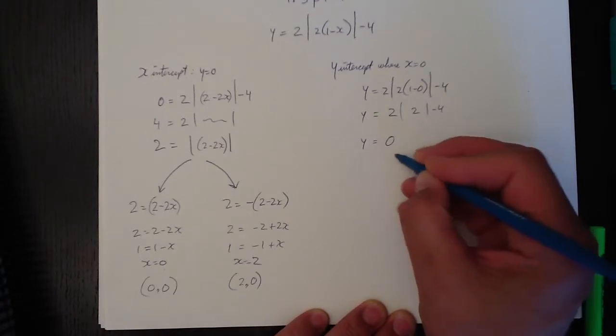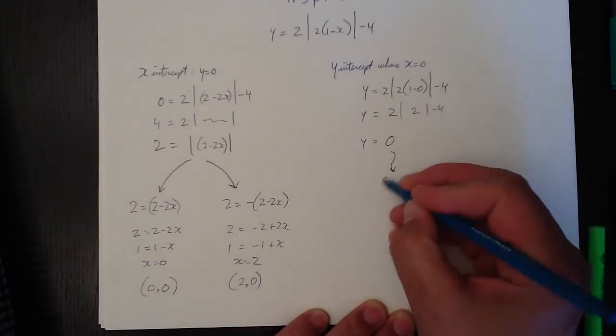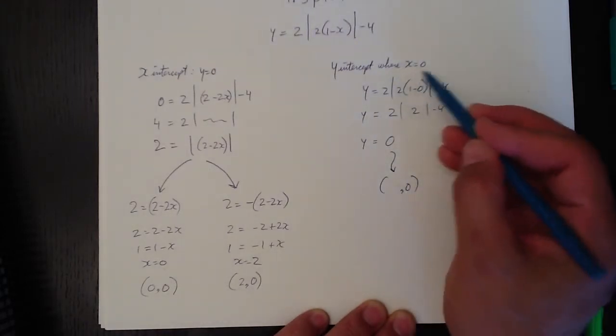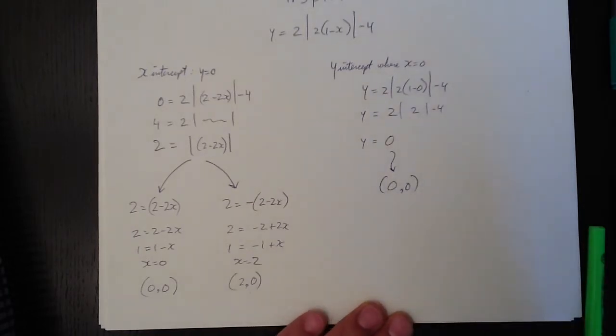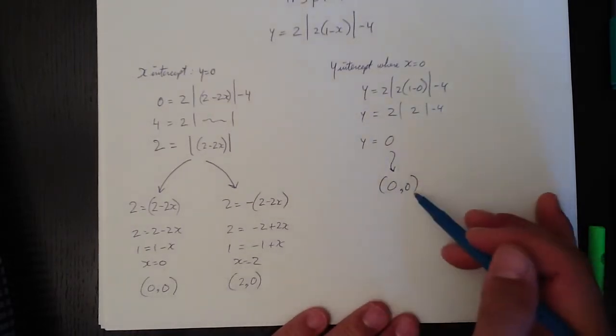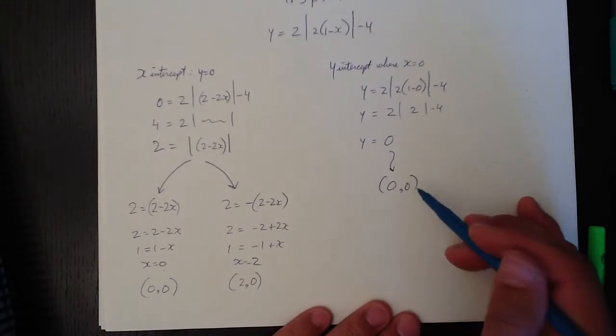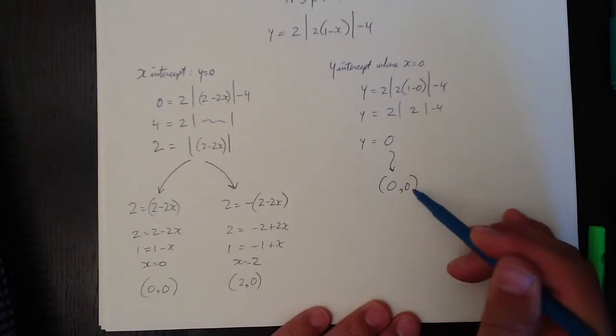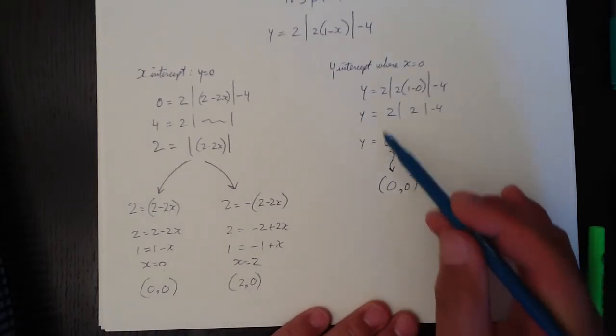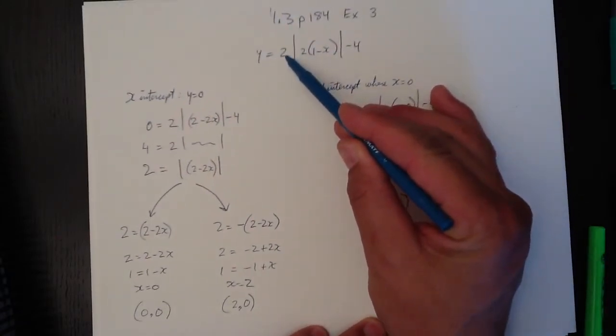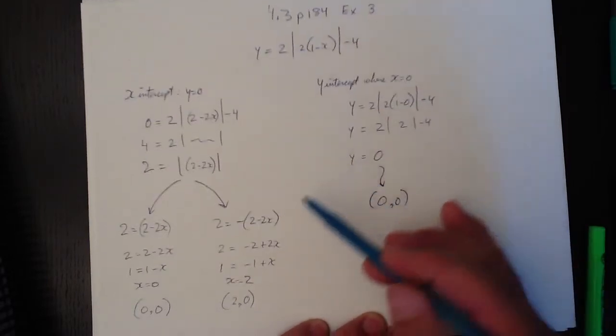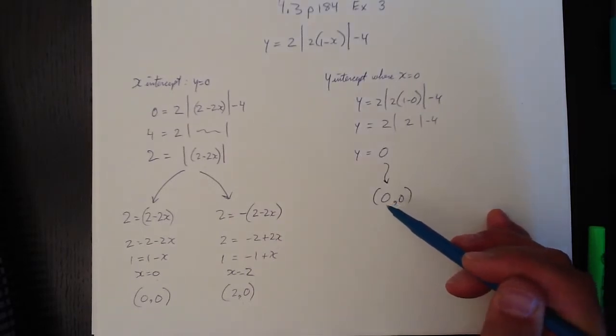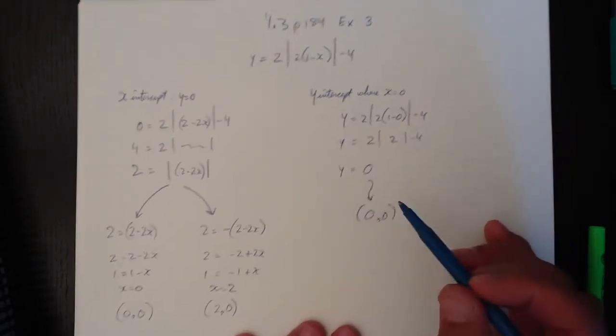We already knew that because we had that coordinate there. So y equals zero is the y-intercept. So once again, that's not the answer, we need the coordinate. So y equals zero, and what's the x value? Well, we set x to zero in order to do this whole thing. So 0, 0. So that gives us our intercepts, and we know that our domain is all real numbers, as it is for all of these linear functions. The range though is from the vertex up. And the vertex appears to be, we haven't calculated the vertex, have we?